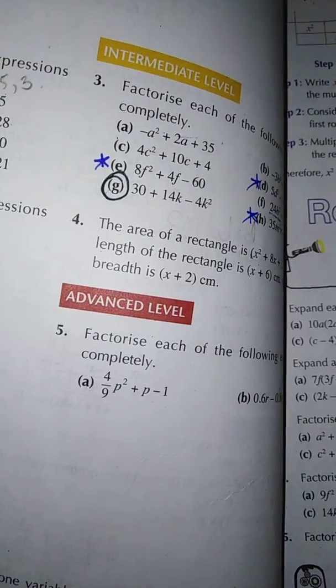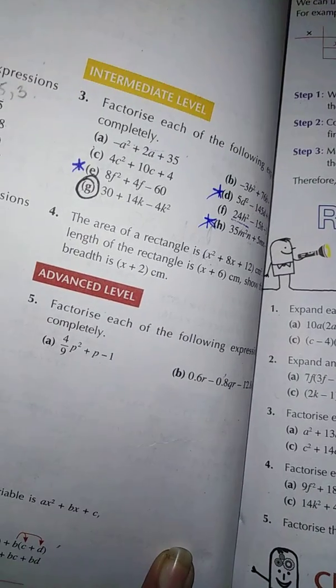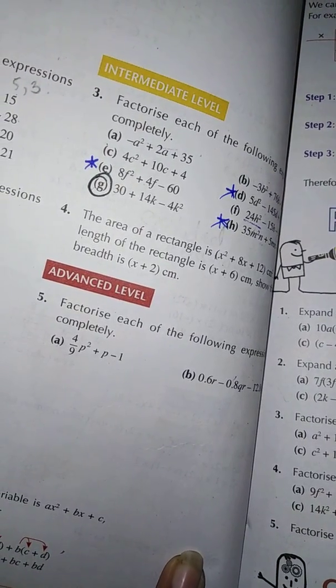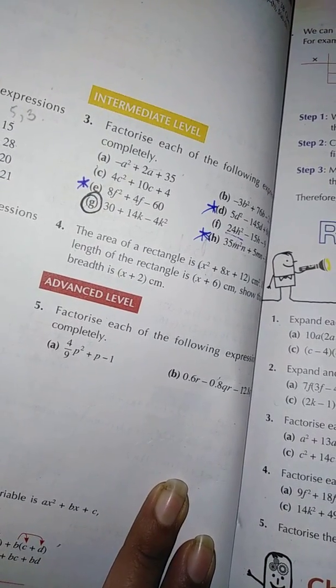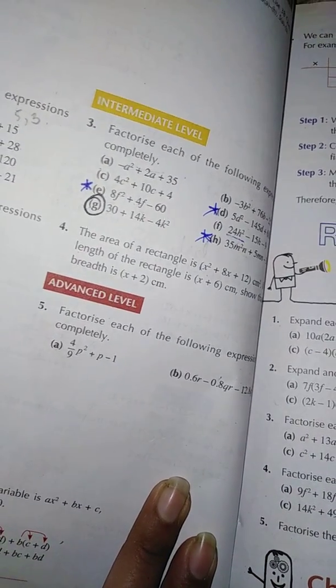Now I'm going to explain exercise 3B, question number 4. The area of a rectangle is x² + 8x + 12 cm². The length of the rectangle is x + 6 cm.